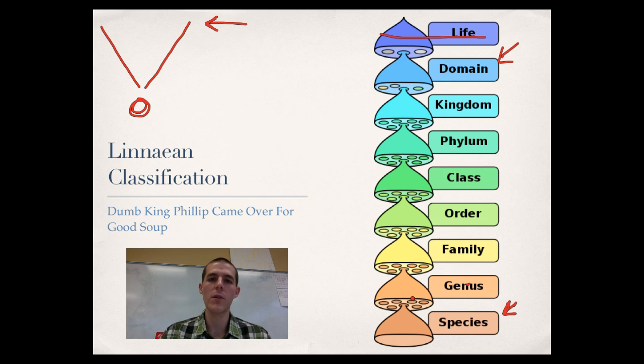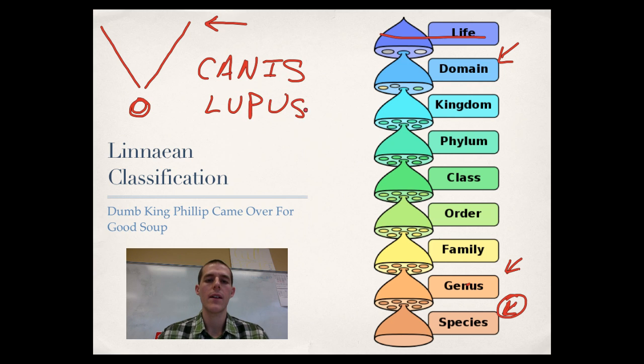Now, out of this system that Linnaeus put together, he also came up with his naming system because scientists need a common way to communicate what an organism is, obviously. Scientists around the world speak a ton of different languages, so they need a common way to communicate this is what this animal is, this is what that animal is. So, we use binomial nomenclature, which uses the genus and the species to show what an animal is. So, an example, the common wolf is Canis lupus. Canis is the genus name, lupus is the species name. Canis denotes that this organism is a canine, meaning that it's related to the dog in your house, and a wolf, and a coyote, and a fox. Lupus denotes that it is a wolf. So, this is the broader category. This is the specific organism. And that's basically how binomial nomenclature works. We are Homo sapiens.